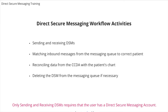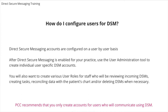There are basically four workflow activities associated with Direct Secure Messaging: sending and receiving DSMs, matching inbound messages from the messaging queue to the correct patient, reconciling data from the CCDA with the patient's chart, and deleting the DSM from the messaging queue if necessary. Only sending and receiving DSMs require that the user has a Direct Secure Messaging account. Anyone in the practice with access to the messaging queue can match inbound messages to the correct patient. Access to the messaging queue is configured on a role-by-role basis in User Administration, which is located under the Tools menu.